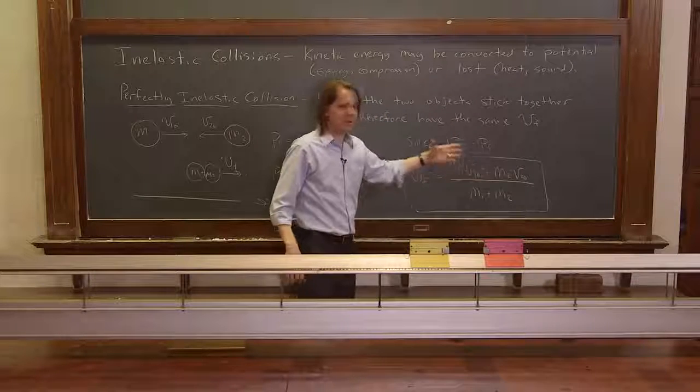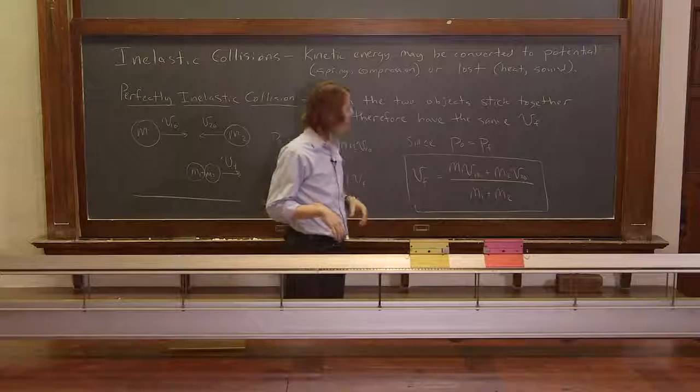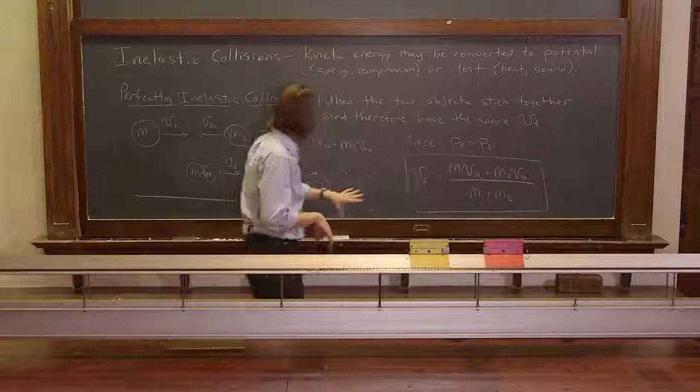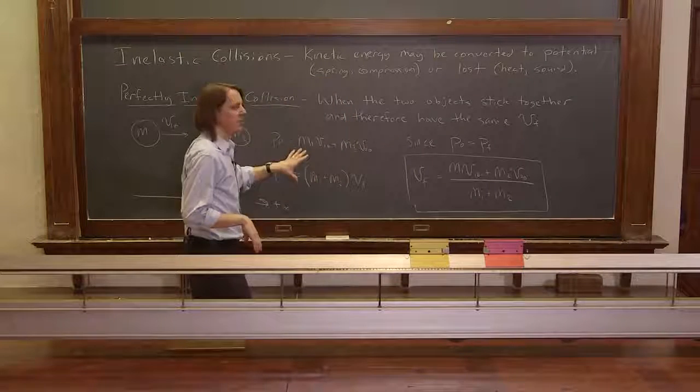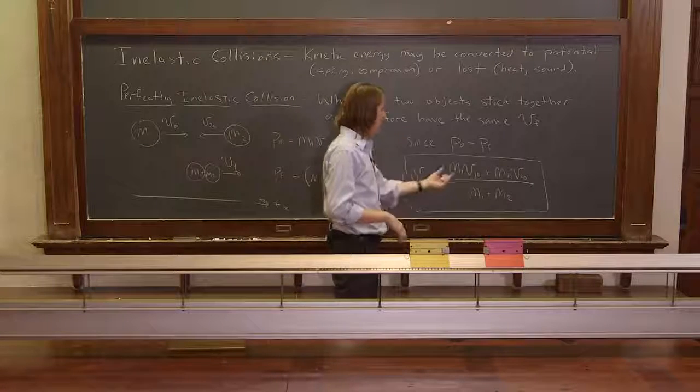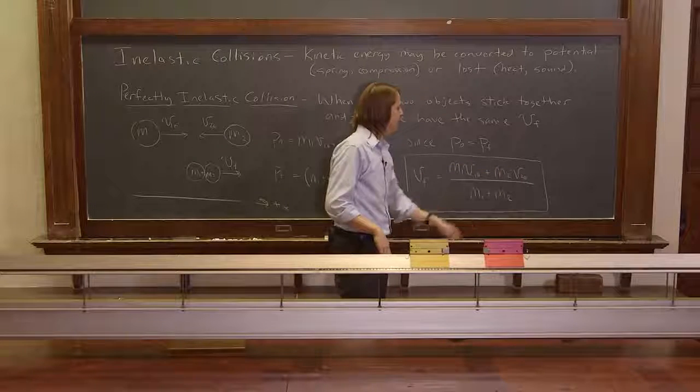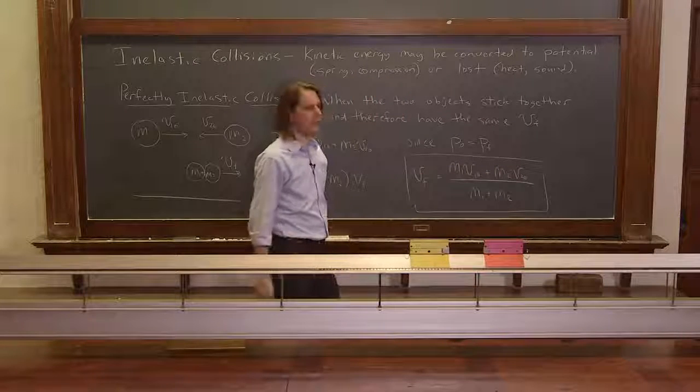We could get into having the masses be different and then they would still work, but it's just not as intuitive when they're different. So this is one that you could probably derive fairly easily if you had to, but it's also worth memorizing. Perfectly inelastic collision, it's just the initial momentum. And to get this velocity, it's the initial momentum divided by the mass once they've stuck together.